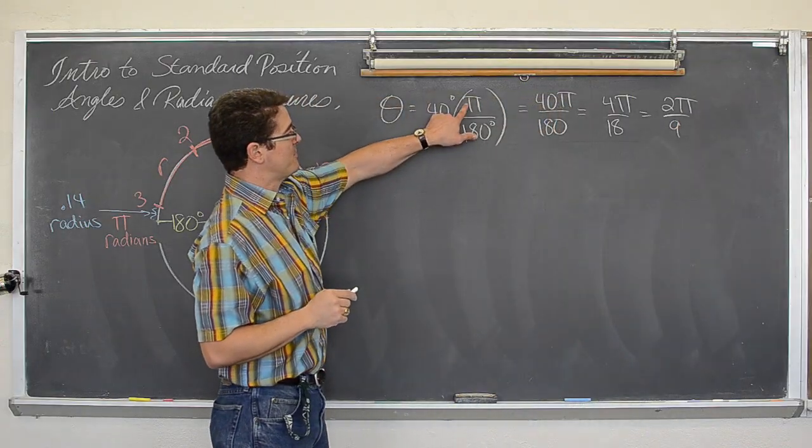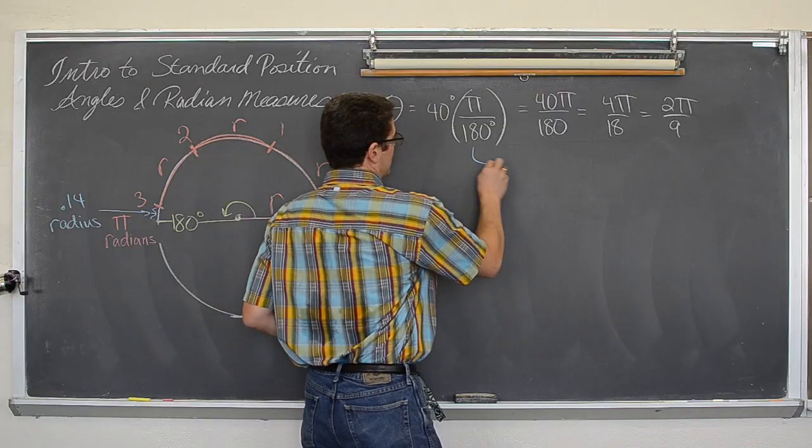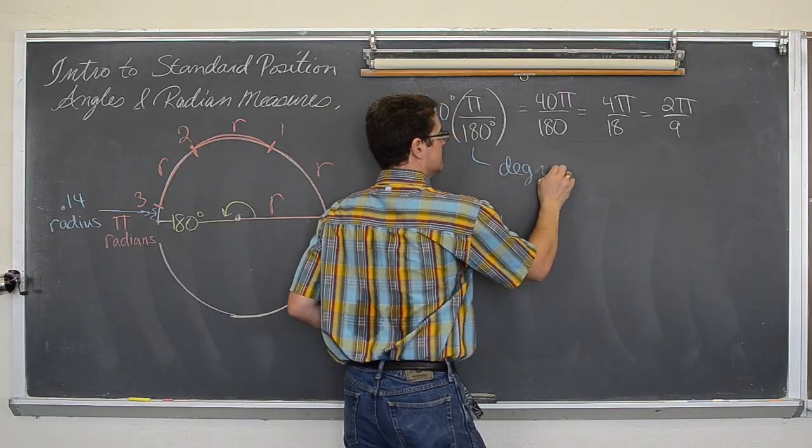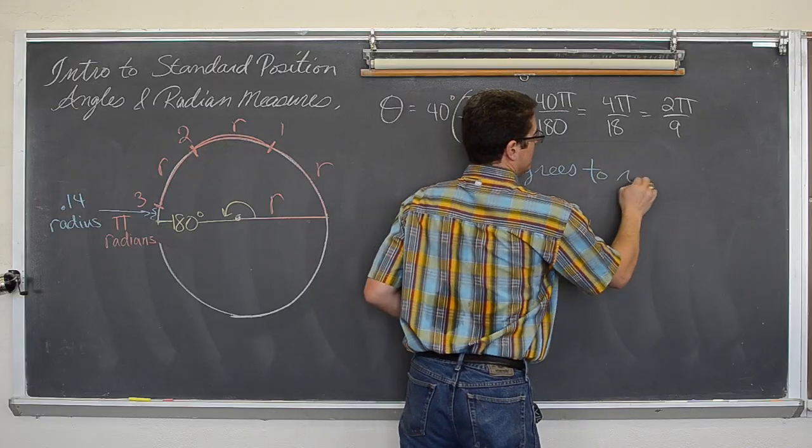So if you multiply by pi over 180, that is going to get you from degrees to radians.